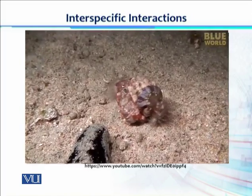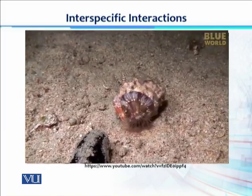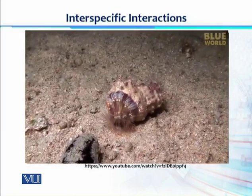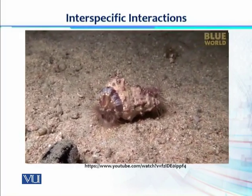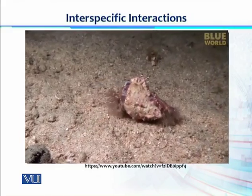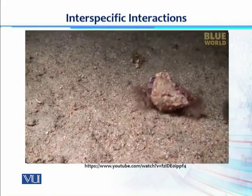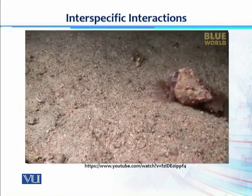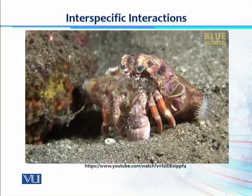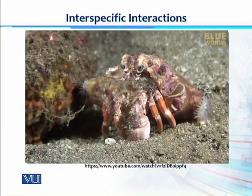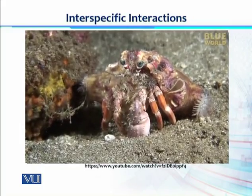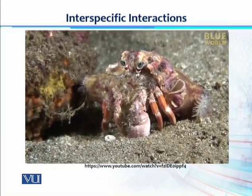Take this hermit crab — she has a garden of small anemones on her shell that she carries everywhere she goes. The anemones give her protection from predators like octopus because their stinging tentacles pack a punch. The anemones also have a great life on her shell because they gather scraps from her messy eating and travel around with her to the next meal.